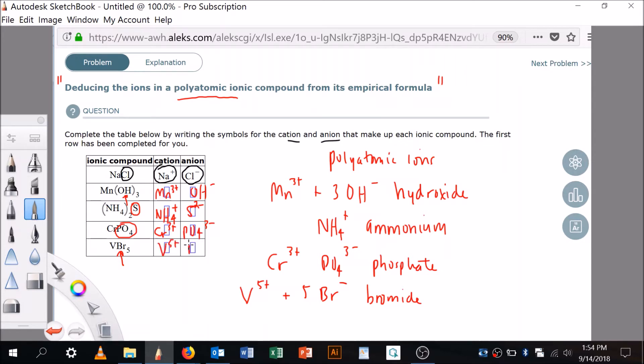Okay, so there's several examples and I think a good range of examples for this kind of problem. So deducing the ions in a polyatomic ionic compound from its empirical formula, and the way to do it is go through and recognize the ions that you know, and then the ions that you don't know you can get from them. We didn't know chromium and we didn't know manganese and we didn't know vanadium, because those are all transition metals.